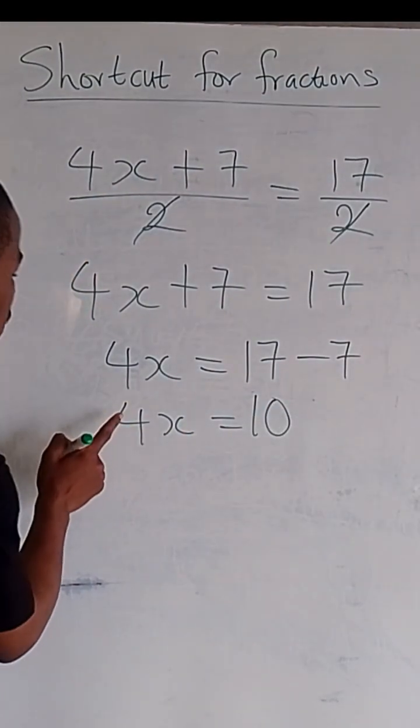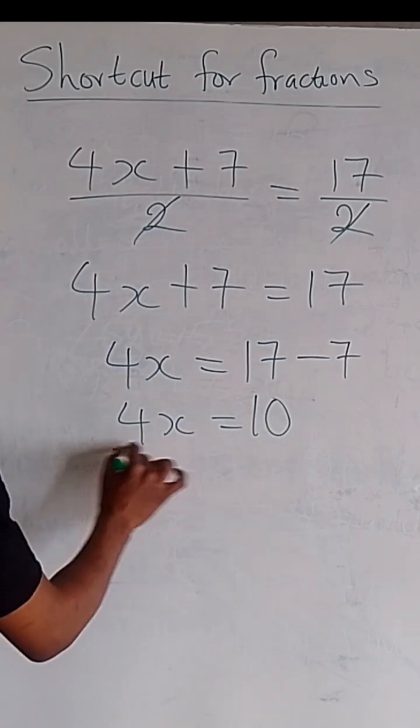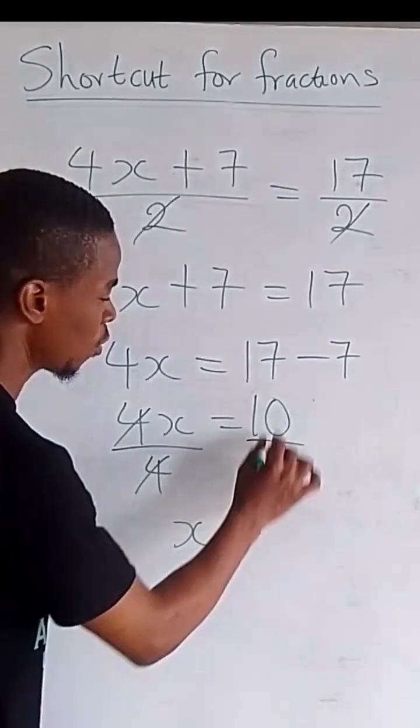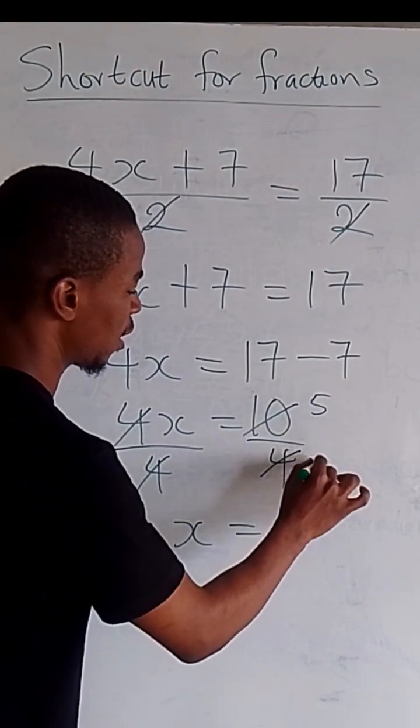And then here you have 4x and here you have 10. So that means you're going to divide both sides by 4. So 4 cancels 4, you have x standing alone equal to 5 over 2.